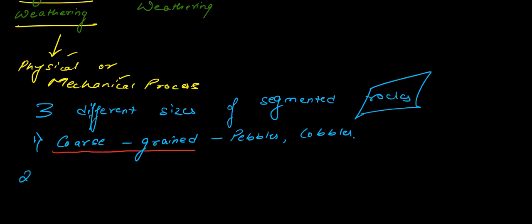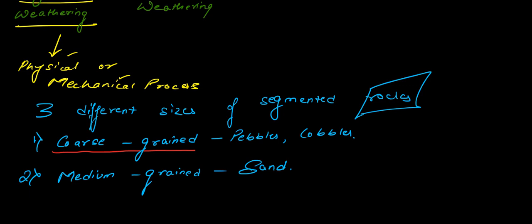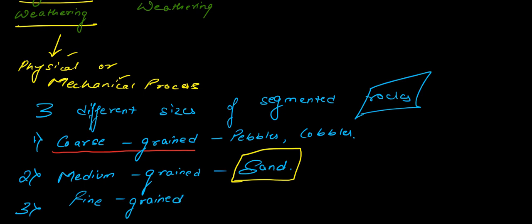Secondly, we have the middle sized, which is known as medium grained. In medium grained we can have sand, because sand is not as large as pebbles or cobbles but has a medium larger size. Third, the smallest particles will be named as fine grained — for example, clay or mud, things which are very very small in size.